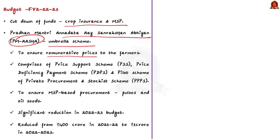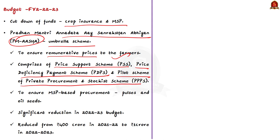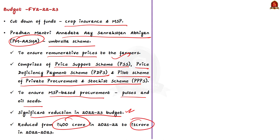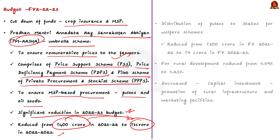Consider Pradhan Mantri Annadata Aay SanraksHan Abhiyan, that is PM-AASHA, which is an umbrella scheme to ensure remunerative prices to farmers. It comprises the Price Support Scheme, Price Deficiency Payment Scheme, and Pilot Scheme of Private Procurement and Stockist Schemes. For such an essential scheme for MSP-based procurement, especially in pulses and oilseeds, allocation has been significantly reduced — from 400 crores in 2021-22 to just one crore in 2022-23.